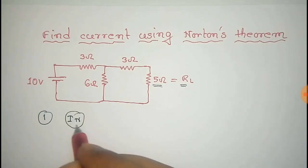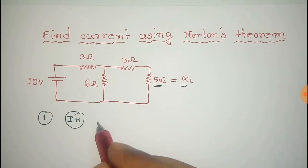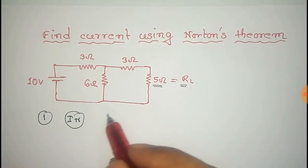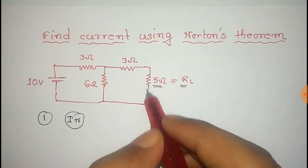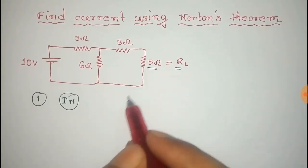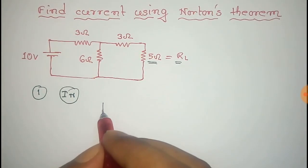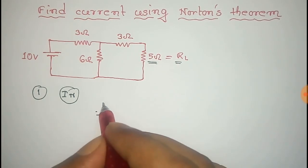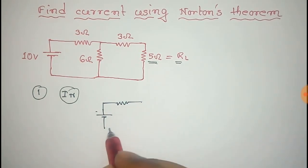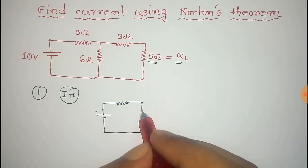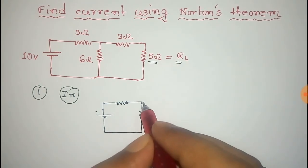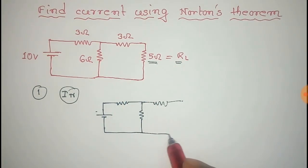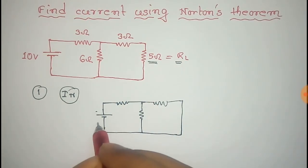The first step is to find the Norton current. To find the Norton current, we have to short the load resistor of this circuit. We will redraw the circuit after shorting the load resistor, and all the other components of the circuit will remain the same.